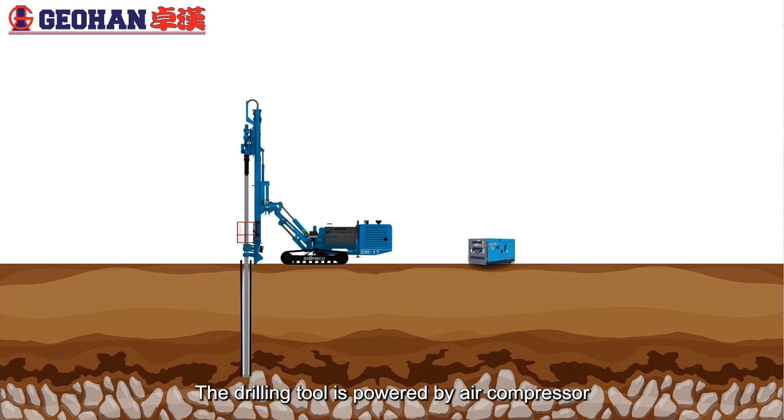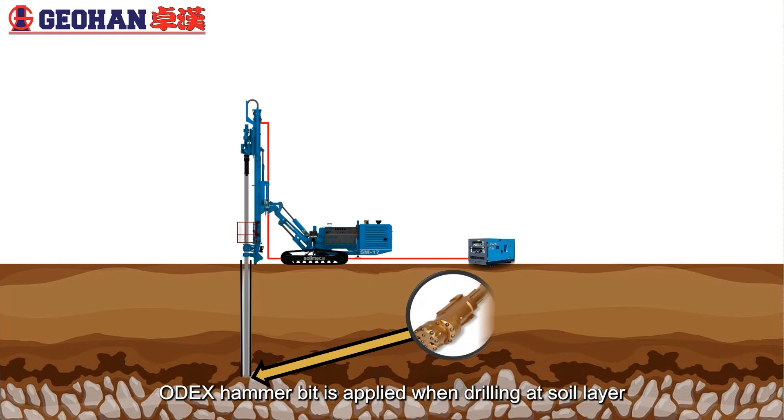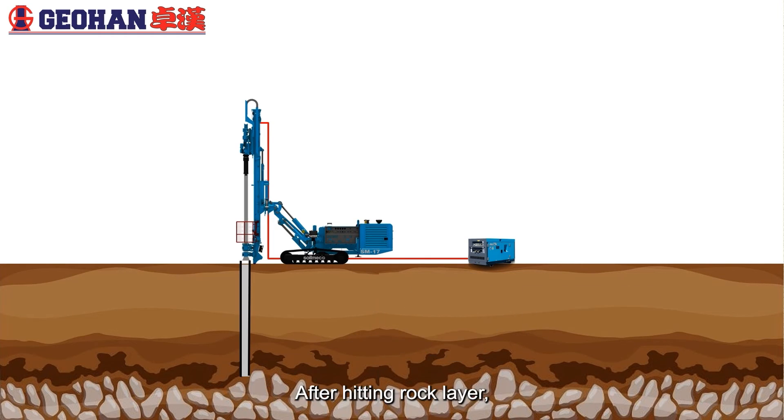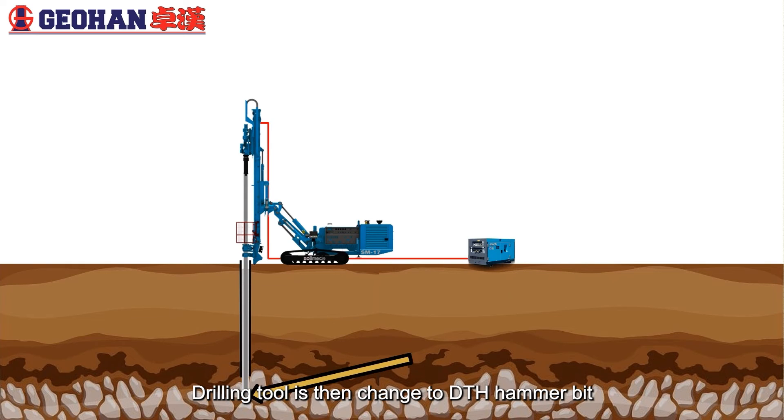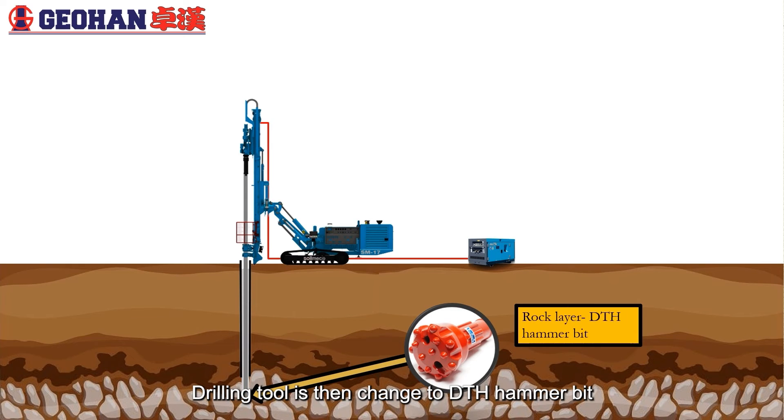The drilling tool is powered by air compressor. ODEX hammer bit is applied when drilling at soil layer. After hitting rock layer, drilling tool is then lifted up. Drilling tool is then changed to DTH hammer bit after hitting rock layer. Drilling work is then continued.